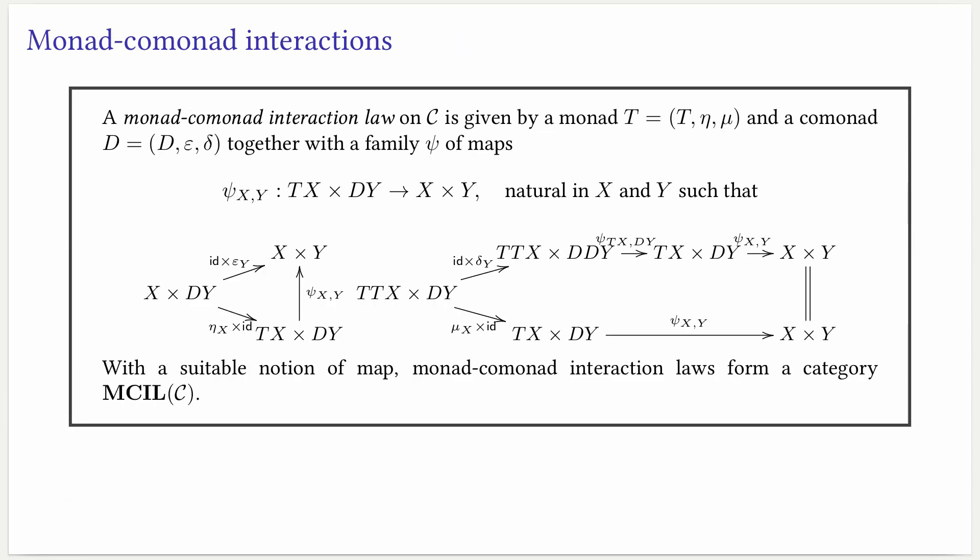Having introduced functor-functor interaction laws, we can now move to the main concept of this talk: monad-comonad interaction laws. A monad-comonad interaction law on C is given by a monad T and a comonad D, together with a family of maps psi of the same form as functor-functor interaction laws. This time, we ask that psi is coherent with the monad and comonad structures we have on T and D. In the diagram on the left, we ask that units are compatible via the interaction. On the diagram on the right, we can see that if we have a sequence of two computations and then apply the interaction, this is the same as unfolding the machine behavior on the right and then applying the interaction twice. With a suitable notion of map, monad-comonad interaction laws form a category.